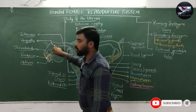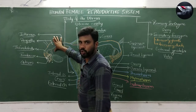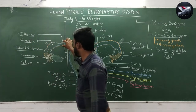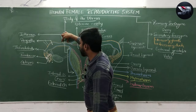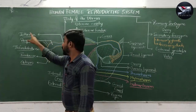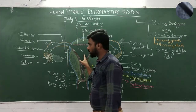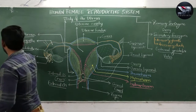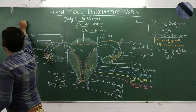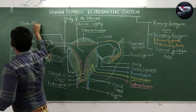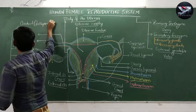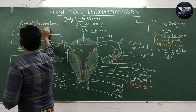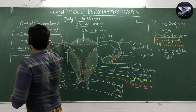The infundibulum is followed by a wider, dilated portion — the longest portion of the fallopian tube — called the ampulla. After the ampulla, there is a very narrow and short portion called the isthmus, through which the fallopian tube joins the uterus. All these components — ostium, fimbria, infundibulum, ampulla, and isthmus — make up the oviduct or fallopian tube, which is approximately 15 to 20 centimeters in length.